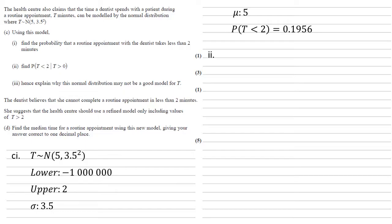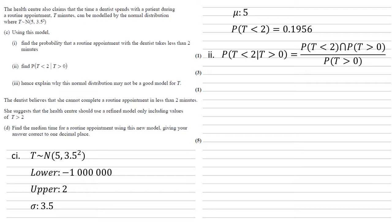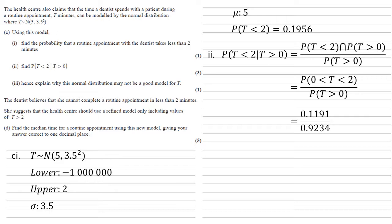For Part C(ii) we need P(T < 2 | T > 0). Using the conditional probability formula, this equals P(T < 2 ∩ T > 0) divided by P(T > 0). The intersection of T < 2 and T > 0 is simply P(0 < T < 2). We use the normal distribution calculator with bounds 0 and 2 for the numerator, and 0 to a suitably large number for the denominator.